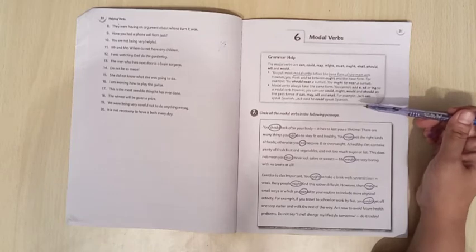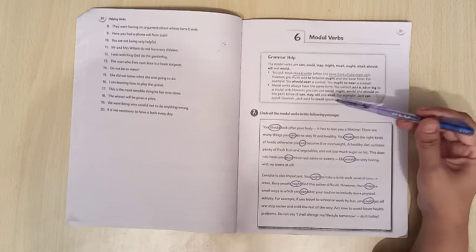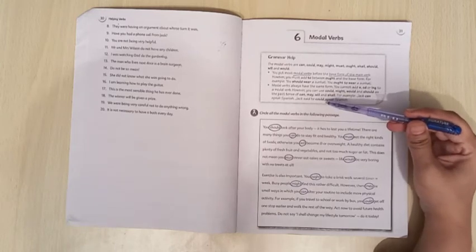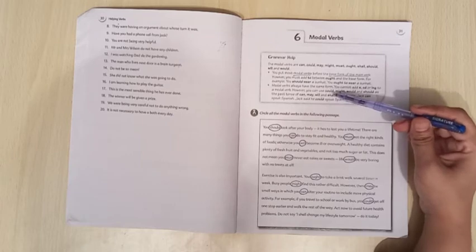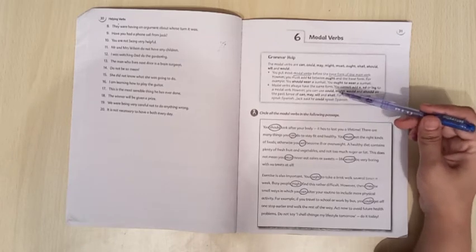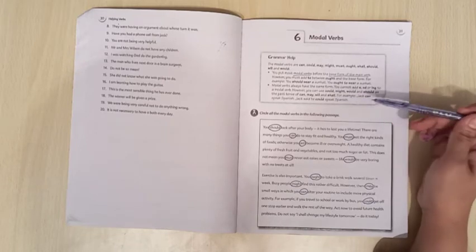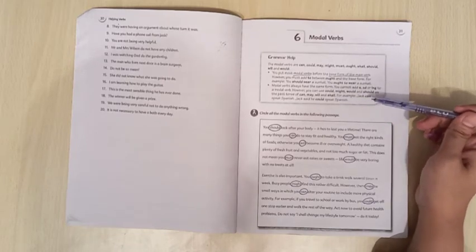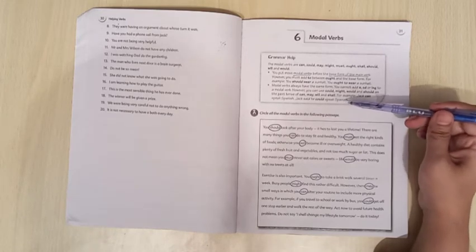You can use could, might, would, and should as the past tense of can, may, will, and shall. For example, can will be changed in past from could, may will be changed in might, will will be changed in would, and shall will be changed in should. For example, Jack can speak Spanish. Jack said he could speak Spanish.